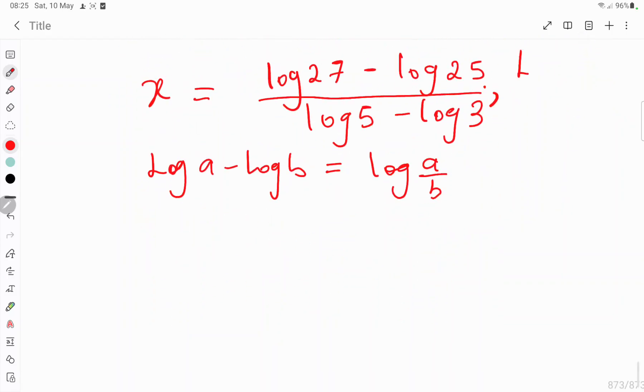So let's apply it here. We have it as x is equal to log 27 divided by log 25, then divided by log 5 divided by 3.